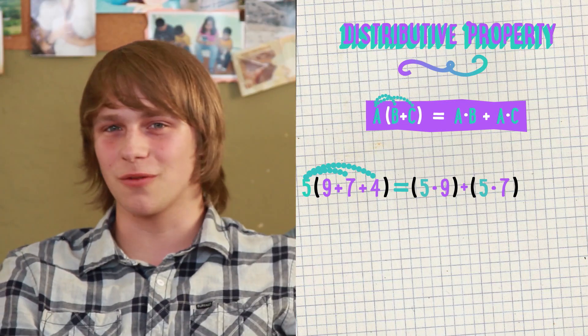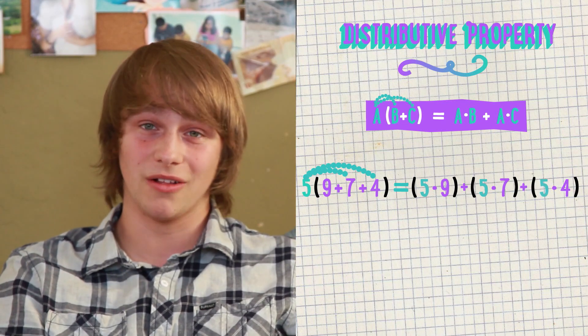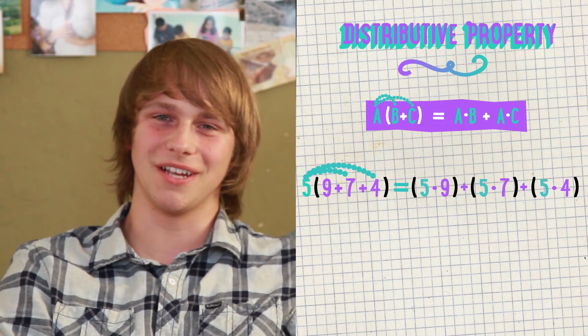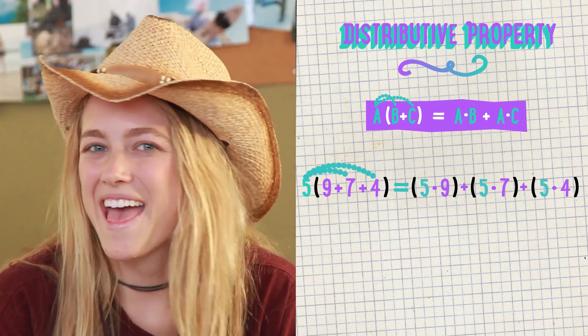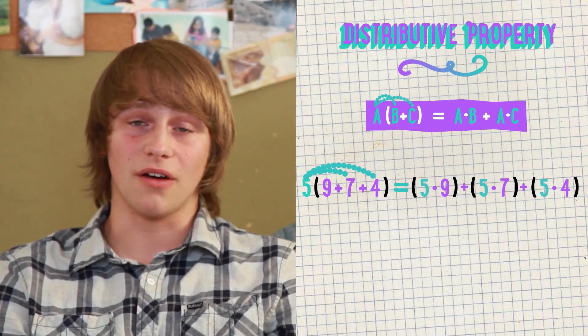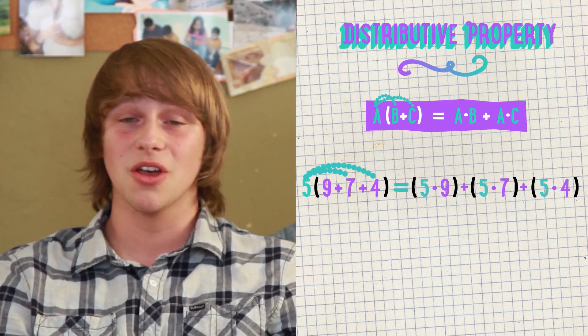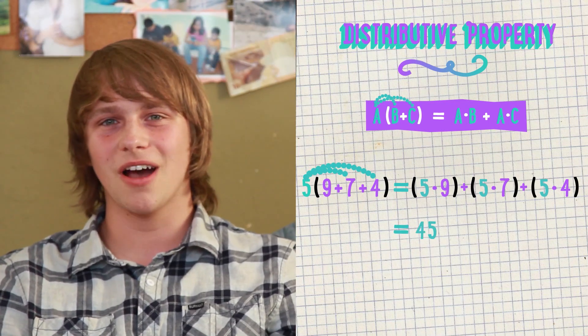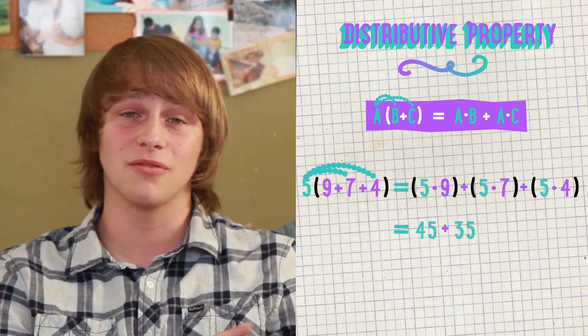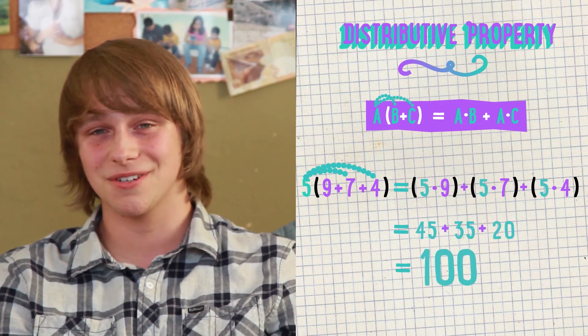We don't want the 4 to feel left out either, so let's multiply the 5 and 4 together as well. Everybody gets multiplied. Let's finish this off. If we multiply inside the parentheses, we get 45 plus 35 plus 20, which is 100.